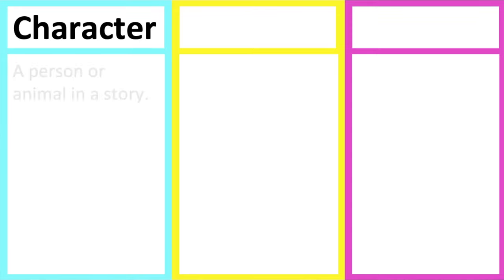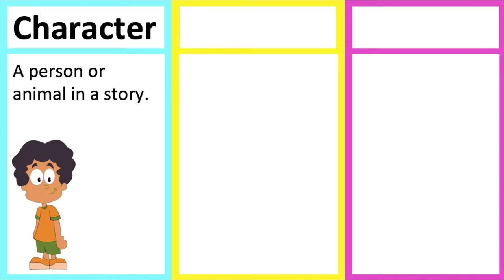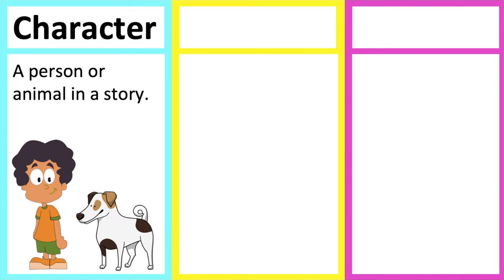A character is a person or animal in a story. The characters in a story are usually described well, so the reader can visualize what they look like and how they carry out actions. For example, a boy is an example of a character. A dog is also an example of a character.